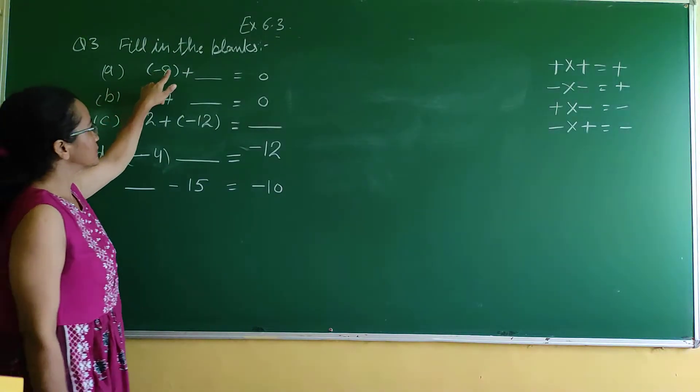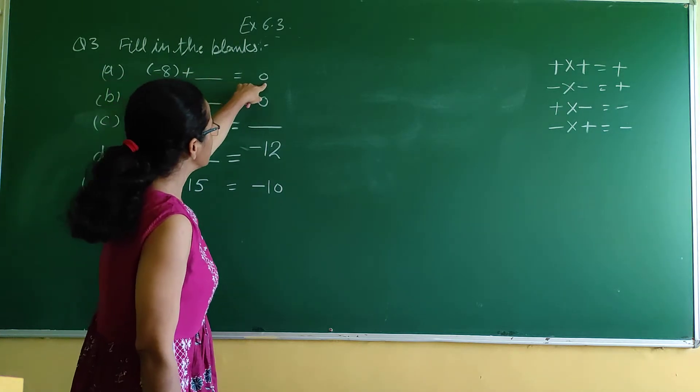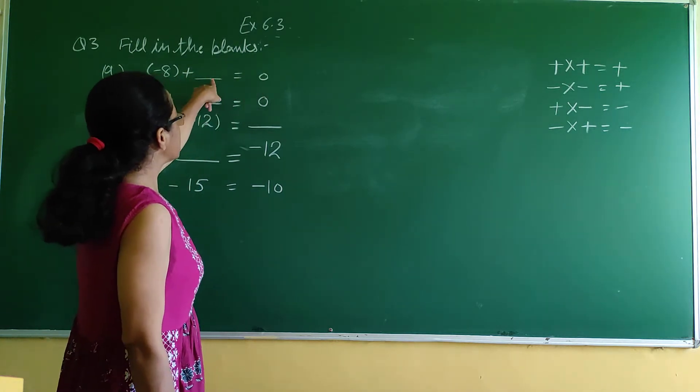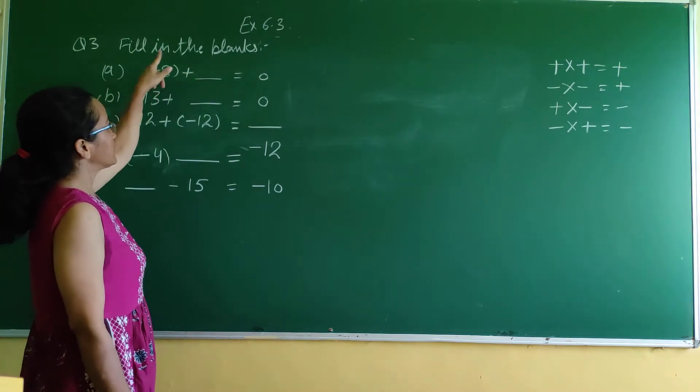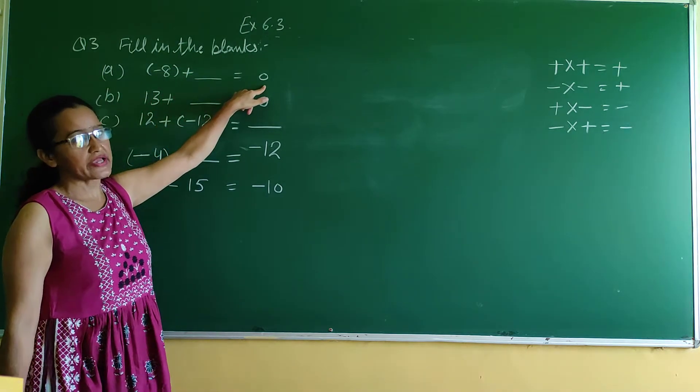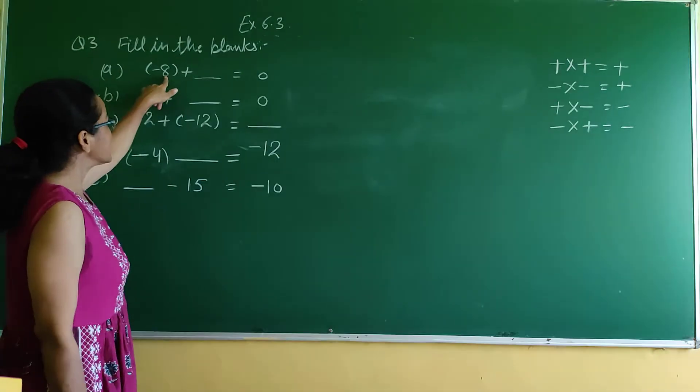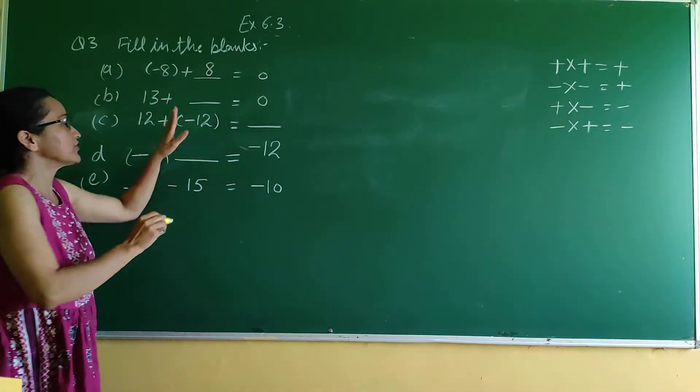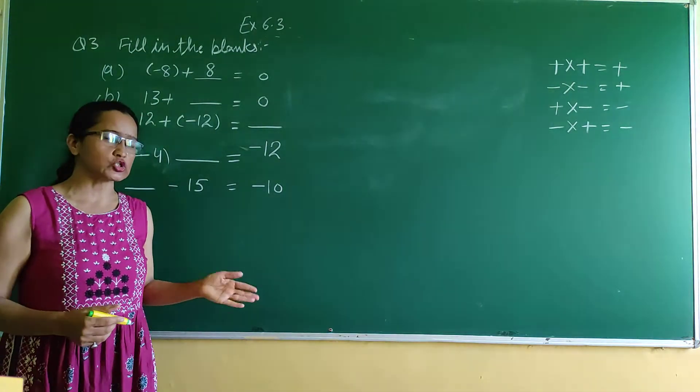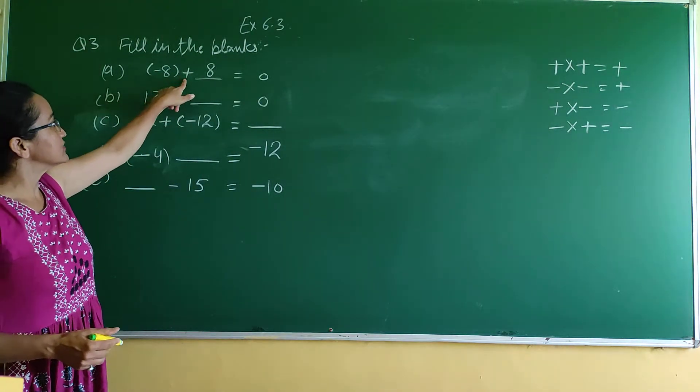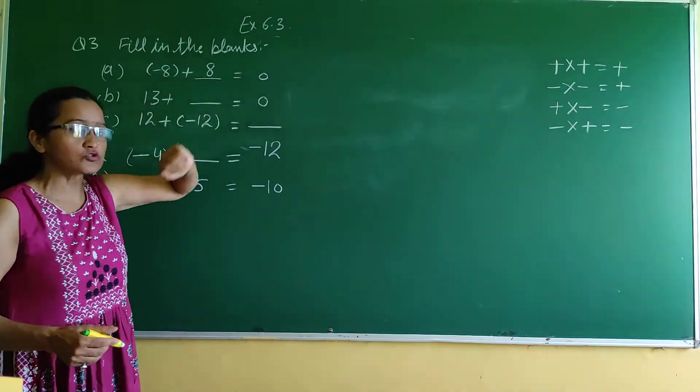Now here is -8 plus blank equals 0. Which number can we write here? We have -8 and the answer is 0. So if we have -8, we add +8. For the given number, we add the same number with opposite sign to get 0. So -8 plus 8 equals 0.